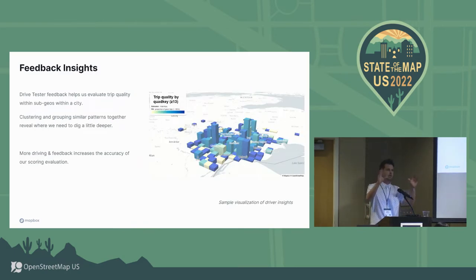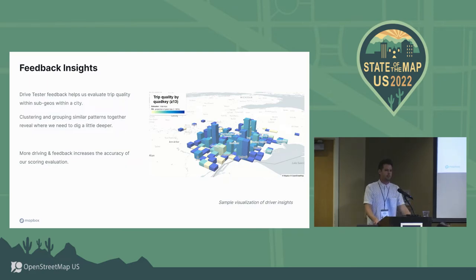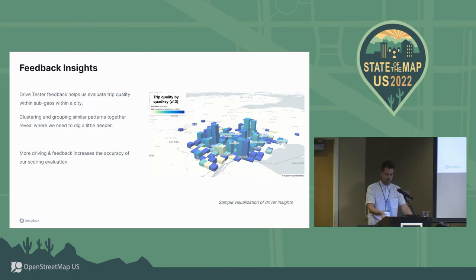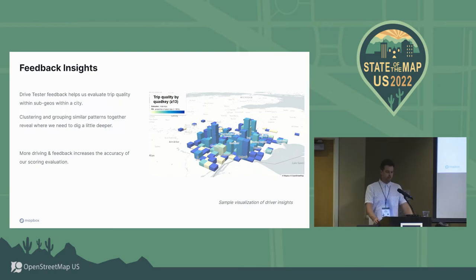That scorecard lets us see quickly where we need to pay attention, but drilling down a level deeper, we need to know how we're performing specifically within sub-geographies or quad keys. This is another example of establishing trip quality — this one is in Detroit — but this kind of analysis can be generated for wherever we're testing. We cluster and group results to help us know where and how to dig a little bit deeper.